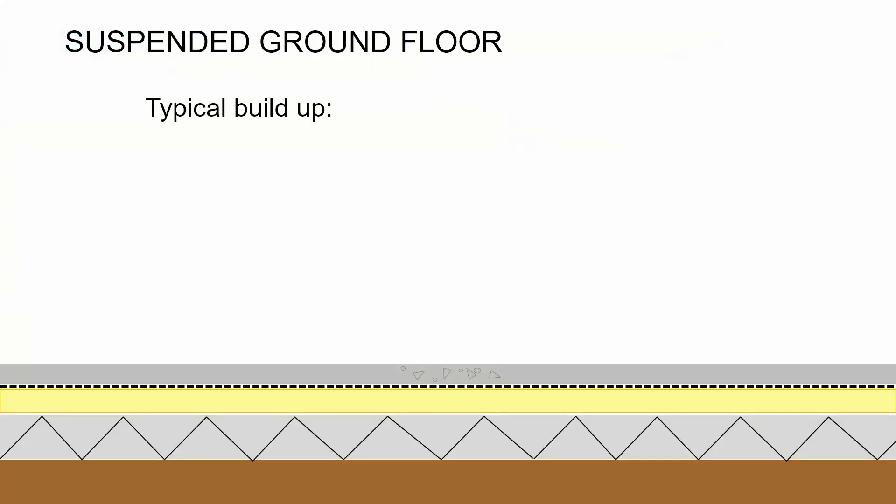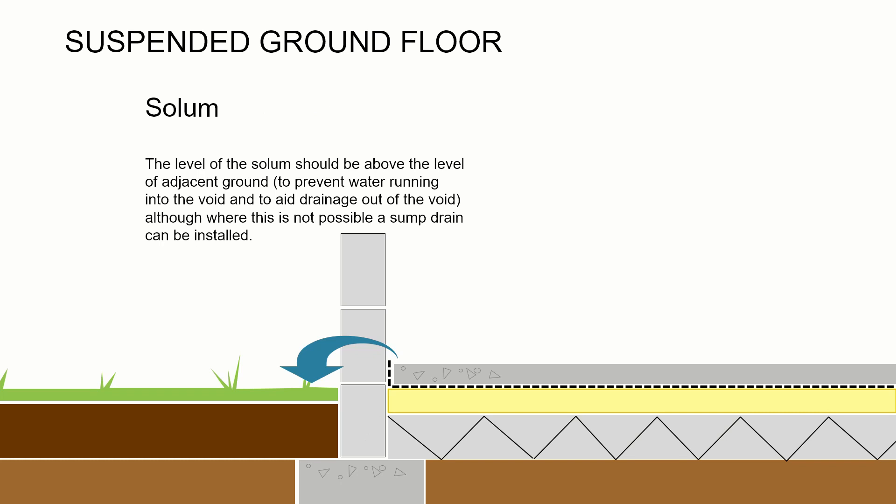That makes up our solum — the base level of the ground floor. Next we need to think about what happens if the solum fills up with water. If there were a flood and that area underneath the floor filled with water, if the ground level outside were too high, moisture could stay permanently and cause damage. So we always need to build the solum higher than the outside ground level, allowing moisture to drain away. If that's not possible on a sloped or difficult site, we can put a sump drain within the solum to take any moisture away.